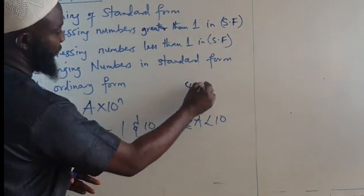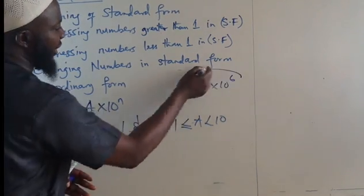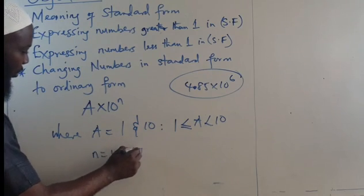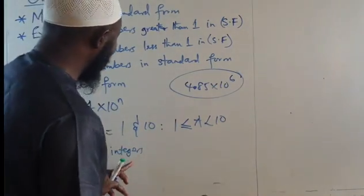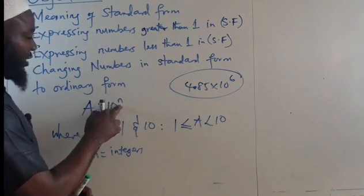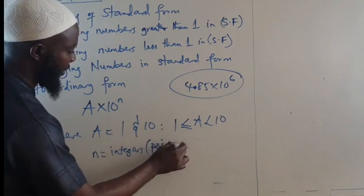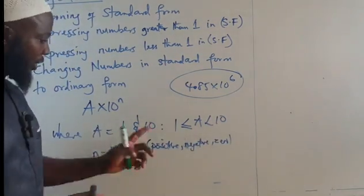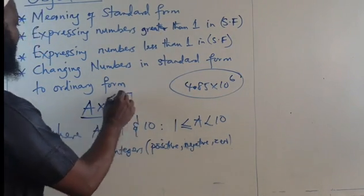That is the reason why we see 4.85 times 10 raised to the power 6 — there is one digit before the decimal point. The N here refers to integers. Integers are whole numbers, both positive and negative, including zero. So N will be negative, positive, or zero. This is the form which will be taken when you want to write any number in standard form.